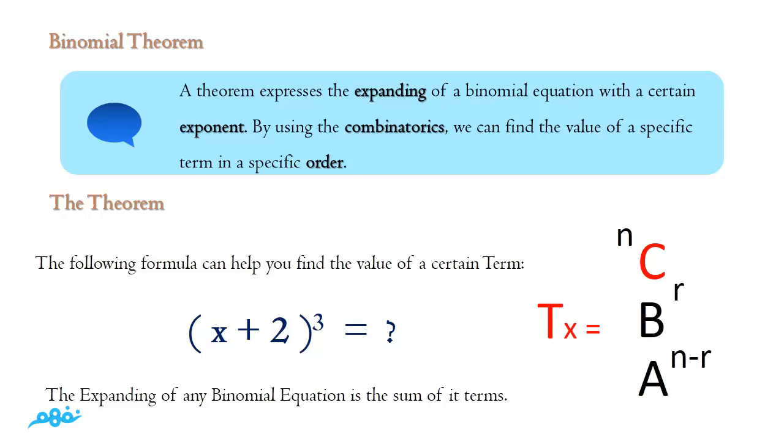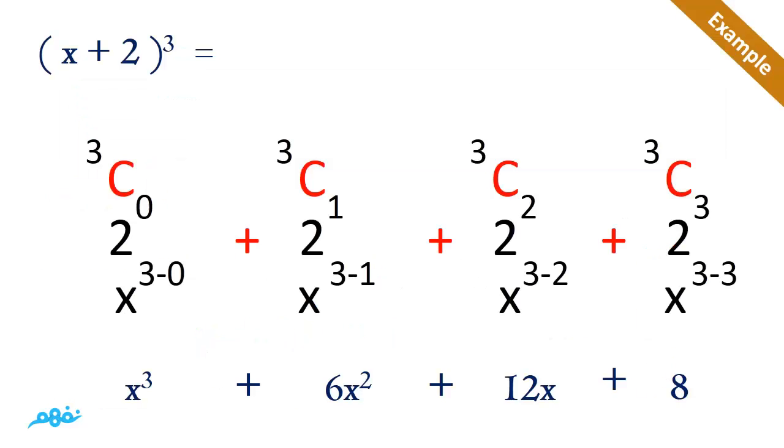The formula is nCr multiplied by b to the power r multiplied by a to the power n minus r. Let's talk more specifically. Here with the example (x + 2) to the power 3, we know that we will have four terms. The expansion will be four terms, but how can we get every term?